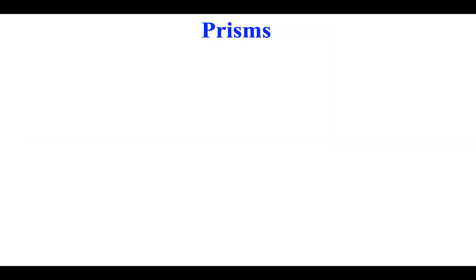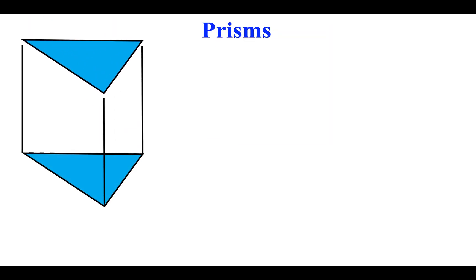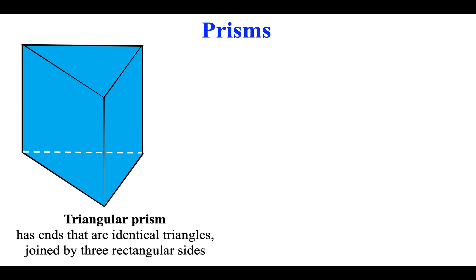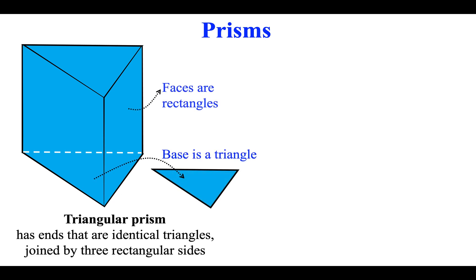Prisms. A triangular prism has ends that are identical triangles, joined by three rectangular sides.